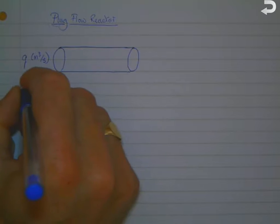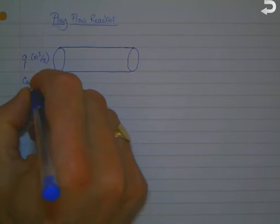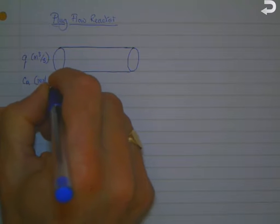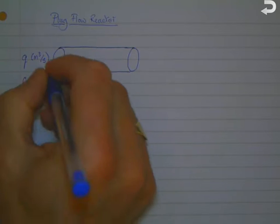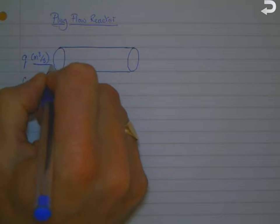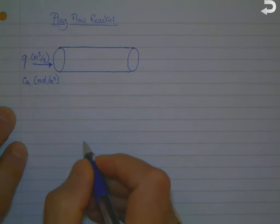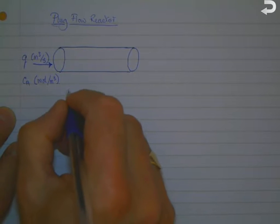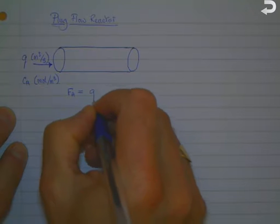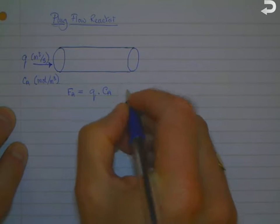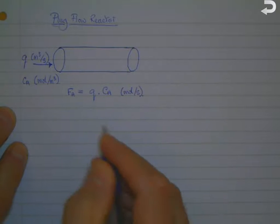We've got a volumetric flow rate of q meters cubed per second, and we're going to consider a reactant component A that has a concentration of Ca moles per cubic meter at any given point. The molar flow rate of A in moles per second is equal to the volumetric flow rate multiplied by the concentration, so Fa equals q times Ca.